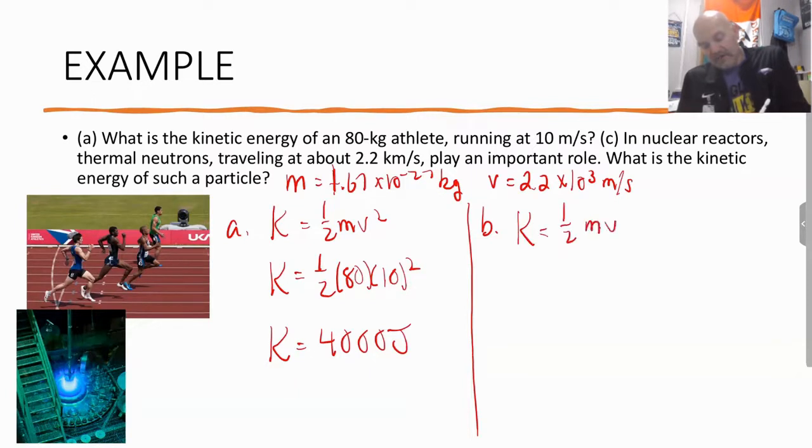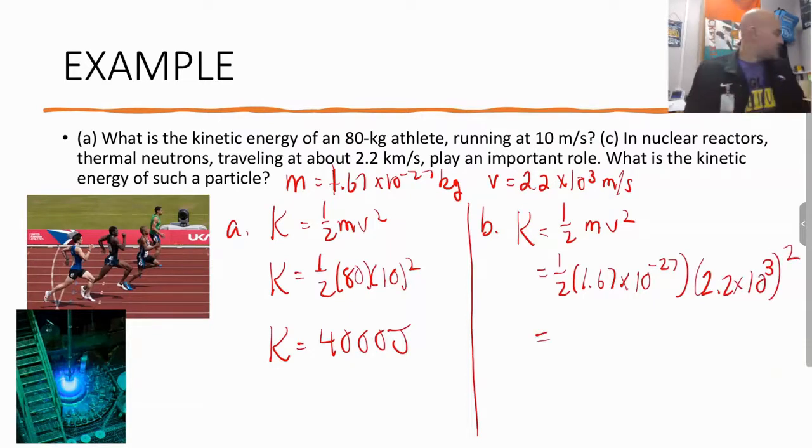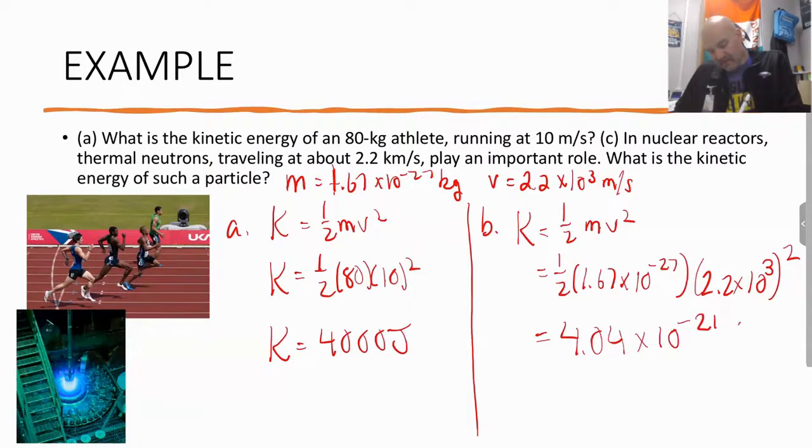Now we have K equals one half mv squared. Now we look at the neutron. One half times 1.67 times 10 to the negative 27th times 2.2 times 10 to the 3 squared. So we got 0.5 times 1.67 exponent negative 27, times 2.2 exponent 3 squared. And we get kinetic energy for the neutron of 4.04 times 10 to the negative 21 joules.